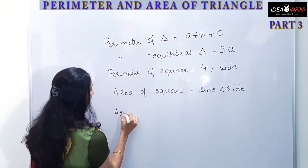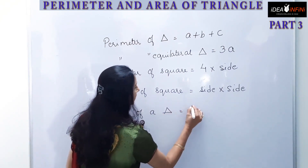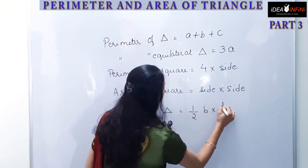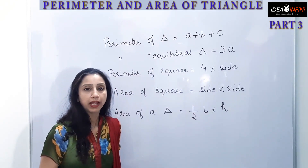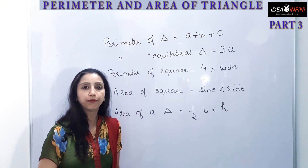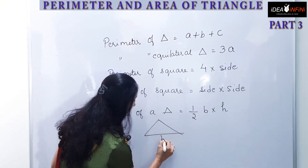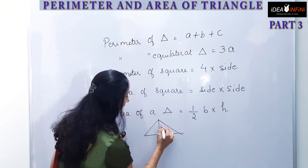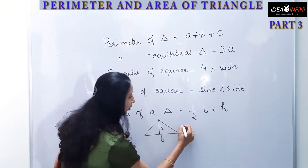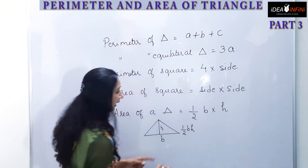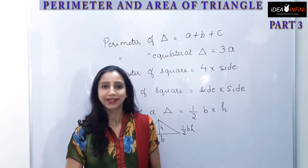The area of a triangle is half base into height, where height is the altitude and base is the base of the triangle where the altitude rests from the opposite vertex. So half base into height gives the area of a triangle. Let's see some problems based on this.